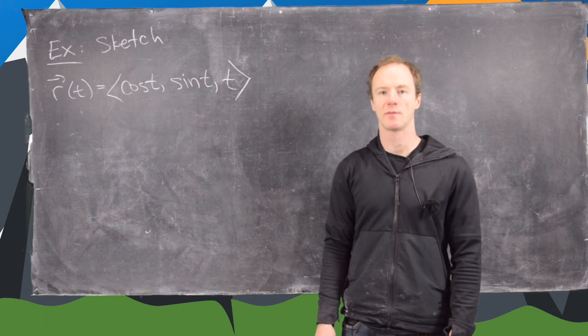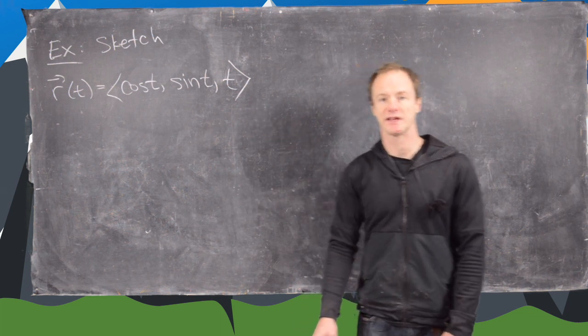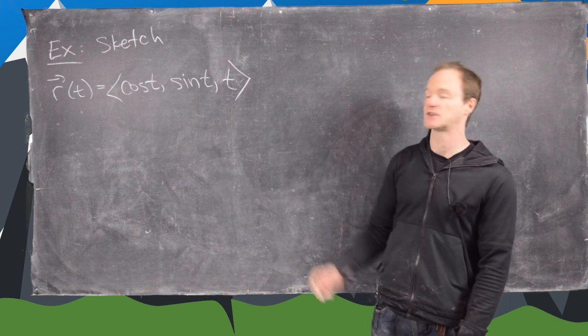Okay, in this video we're going to look at a couple of examples of graphs of vector-valued functions. So this first one is given by cosine t, sine t, and t. So that's our vector-valued function.